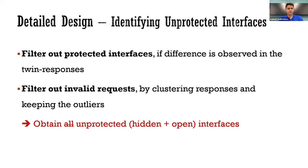We filter out the protected interfaces if there are some differences observed in the twin responses. To further filter out invalid probing requests, we cluster the remaining responses into different groups based on the content of the response body. The responses of invalid requests are the majority and can be clustered into several groups corresponding to the several error-handling cases in the web server. The outliers are unprotected interfaces, namely open interfaces and hidden interfaces.